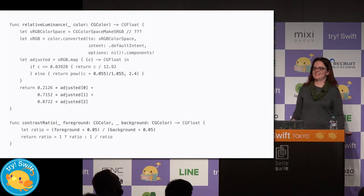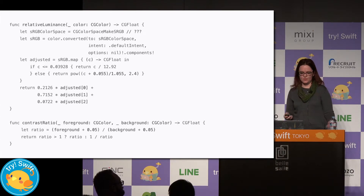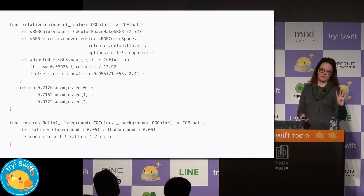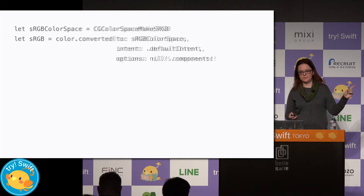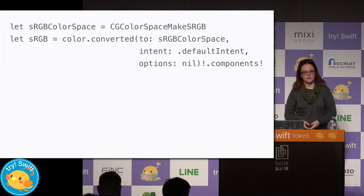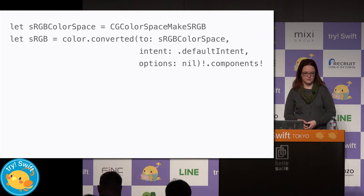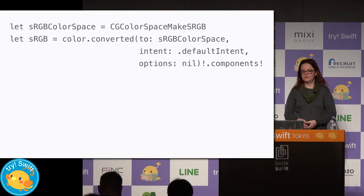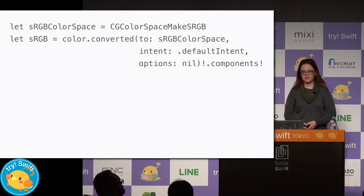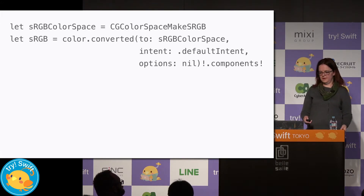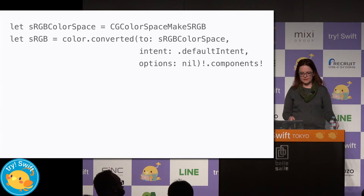They are using math to calculate this, and we can also use math. Math is not as fluent a language for me as Swift, so we can look at the same equations in Swift. It all just barely fits on this slide. We have four important steps. The first step is to make sure our color is in the standard red, green, blue color space — sRGB. If you have a grayscale color or a color from some other color space, it will need to be converted, because this is where the equations are defined. Then we break it up into its red, green, and blue components.